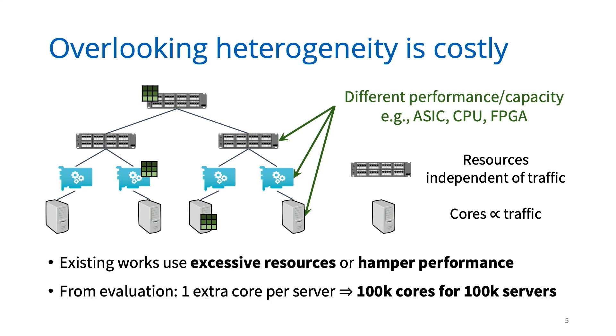By abstracting away many of these facets, existing work either excessively consumes resources or hampers performance. Many times, these resources can be only scarcely available or be used to support other revenue-generating applications. From our evaluation, we find that overlooking this heterogeneity can require as much as one extra core per server. If your deployment has 100,000 servers, that directly translates to saving or over-consuming 100,000 cores. This also has significant monetary implications.